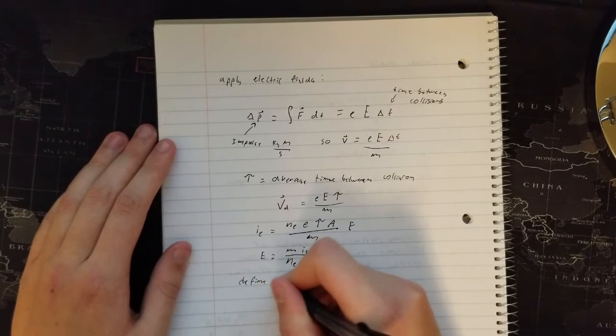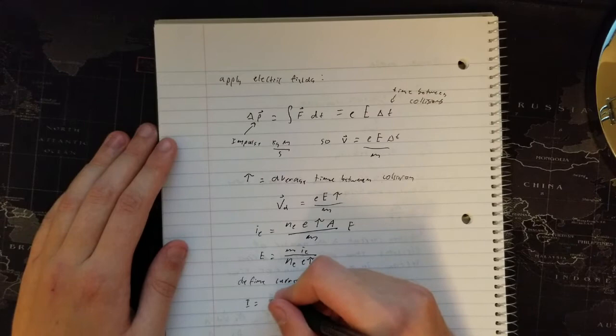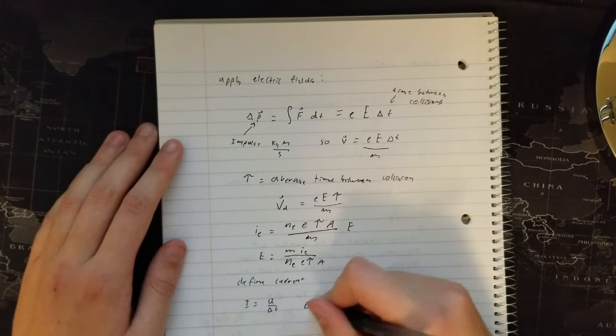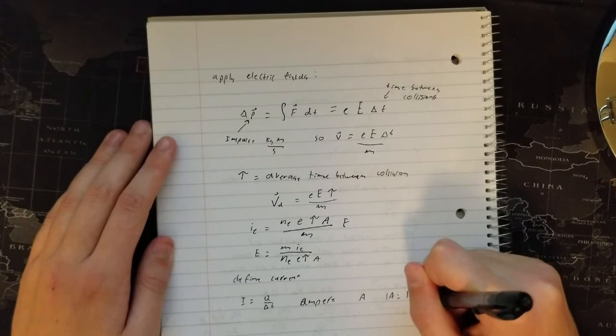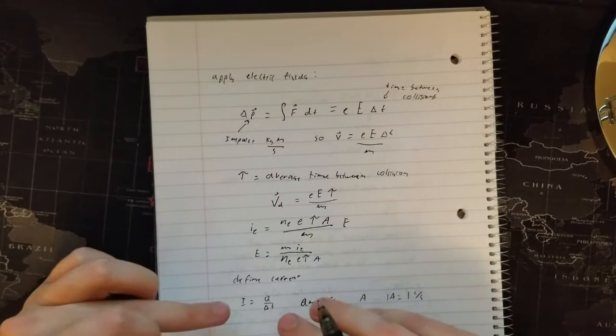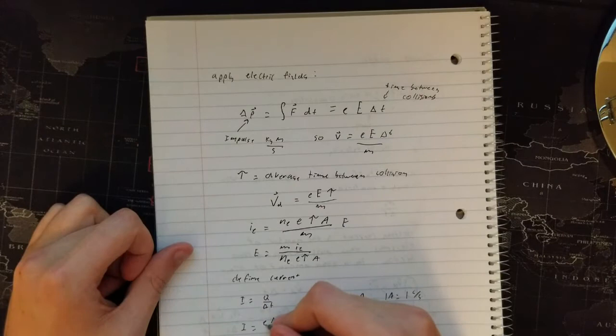Now we need to define current. Current is just charge over change in time, and this has the unit of ampere, represented as a capital A. One ampere is equal to one coulomb per second. Ampere is actually an SI unit, not coulombs, which is a little unusual. From this equation we can extrapolate that I is equal to electron charge times the number of electrons, which is just Q over delta t.